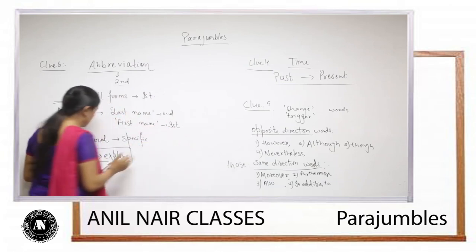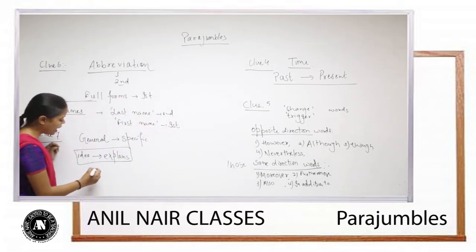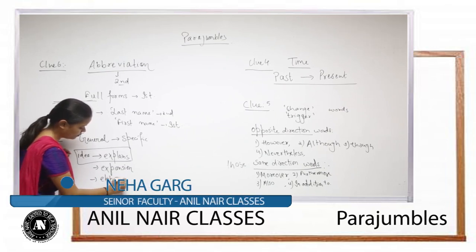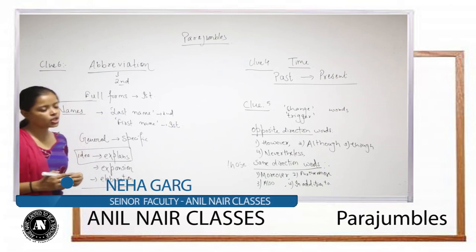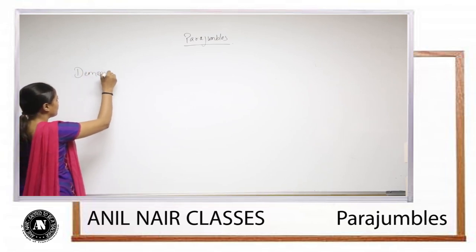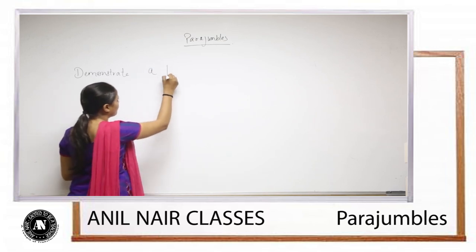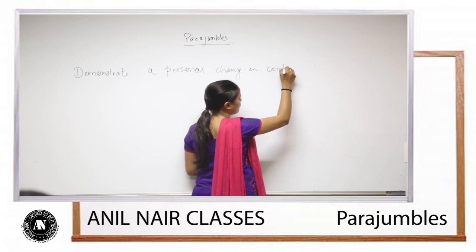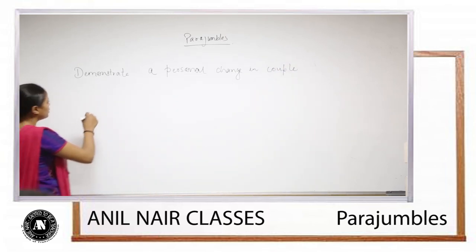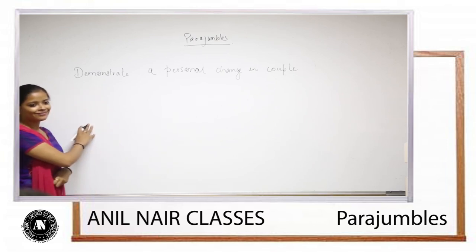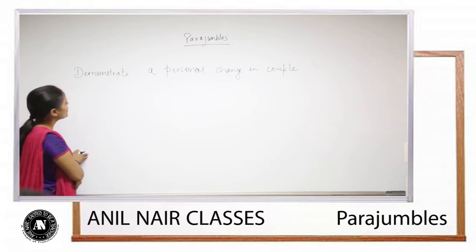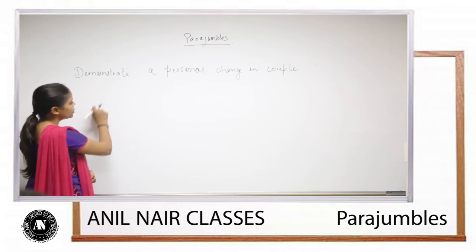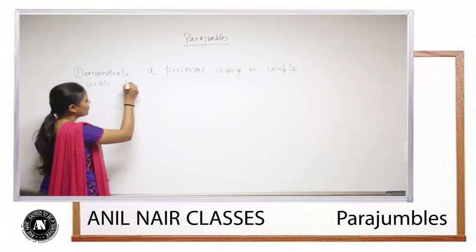So, remember clue number four. Is any couple on earth that is perfect? No, right? So they need a positive change. On the basis of that, you can remember this: they need time to bring a change, because change doesn't come overnight. So remember this mnemonic: 'Demonstrate a personal change in trouble with time and age.' Demonstrate means 'D' — direction words. 'A' means articles. Personal means personal change words. Change means the transition words. Fun here means finding one — that is mandatory prep.